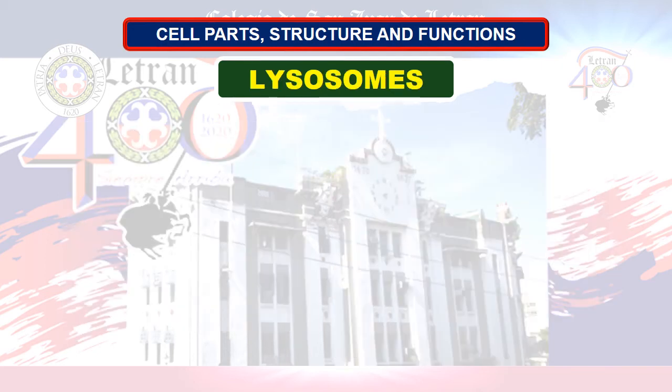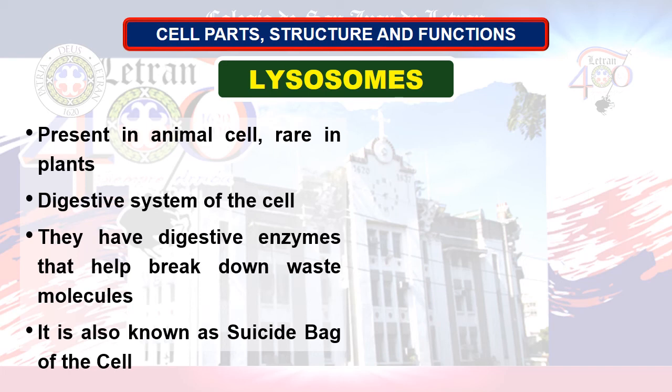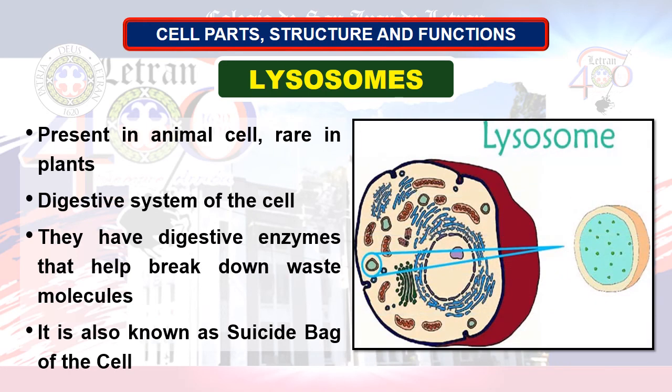And lastly, we have lysosomes. Lysosomes are present only in animal cells. They are also known as the suicide bag of the cell. Lysosomes are membrane-enclosed bodies smaller than the mitochondria. They contain powerful digestive enzymes and are thought to function as the digestive system of the cell.